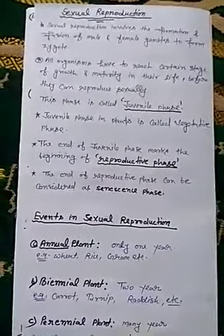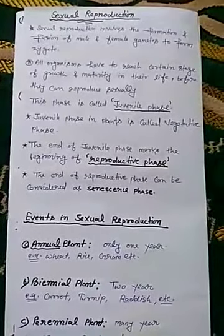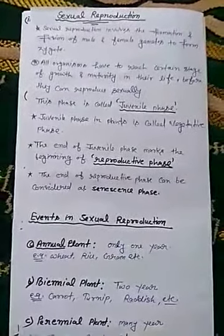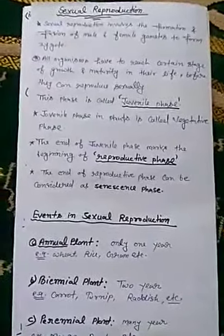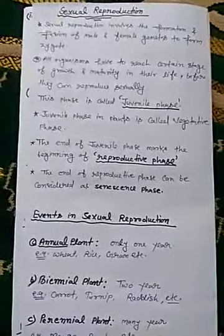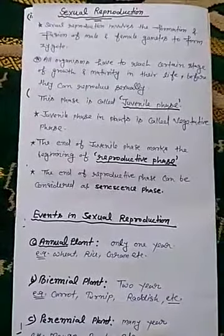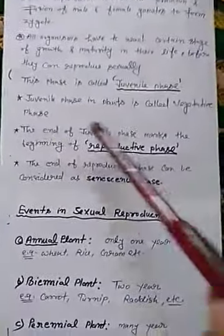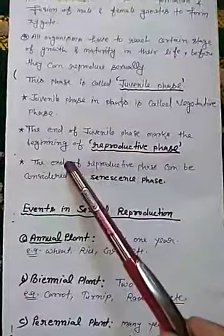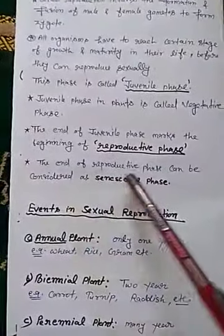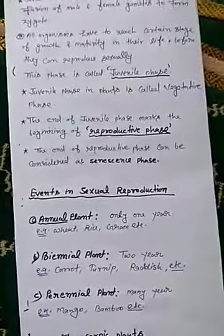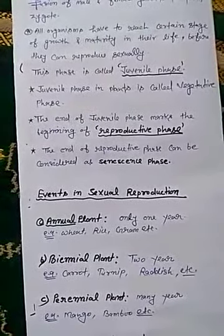There are three phases in the life cycle of an organism. The first is juvenile phase — the phase of growth. Next is reproductive phase. And last one is senescence phase. The end of juvenile phase marks the beginning of reproductive phase, and the end of reproductive phase can be considered as senescence phase. Senescence phase is also known as old phase.